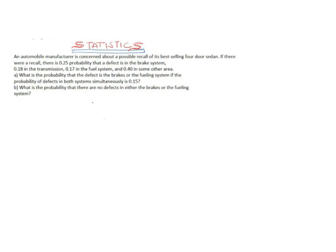Here we are going to solve a question that states: an automobile manufacturer is concerned about a possible recall of its best-selling 4-door sedan cars. If they were recalled, there is a 0.25 probability that the defect is in the brake system, 0.28 in the transmission system, 0.17 in the fuel system, and 0.40 in some other areas.